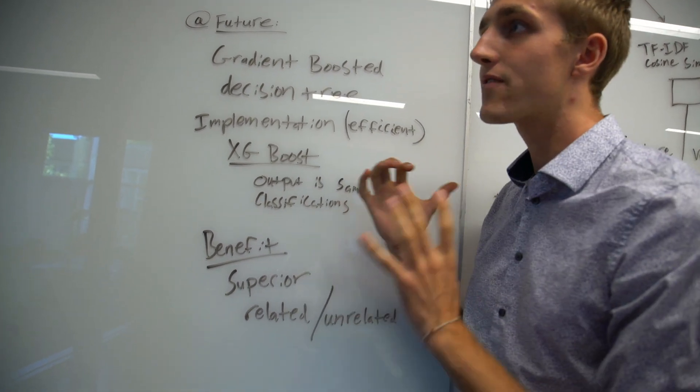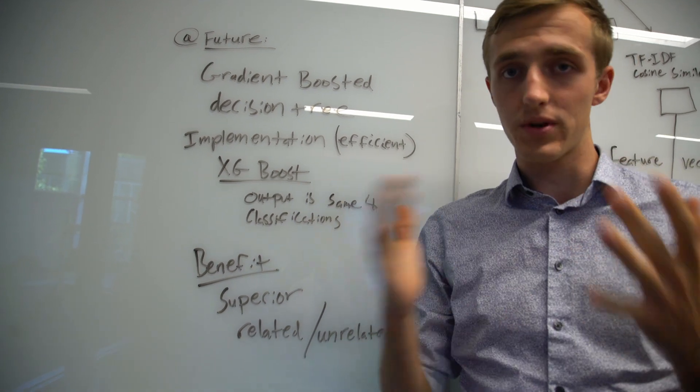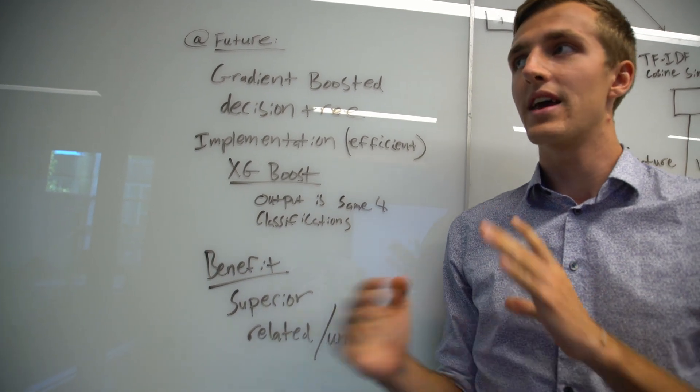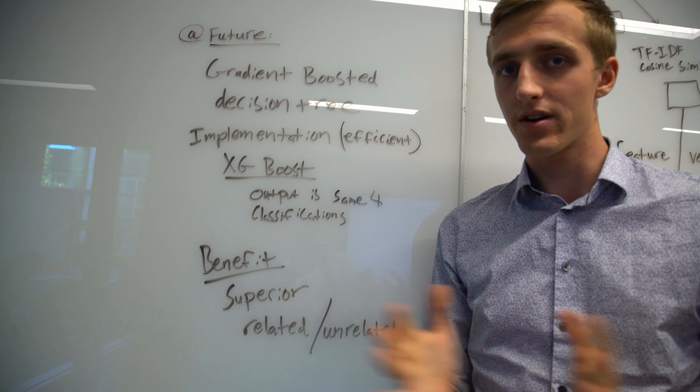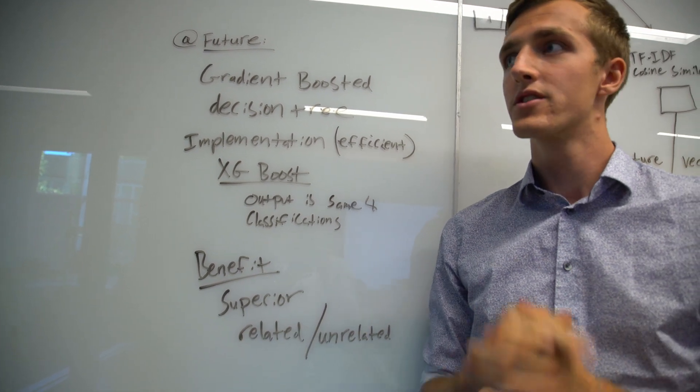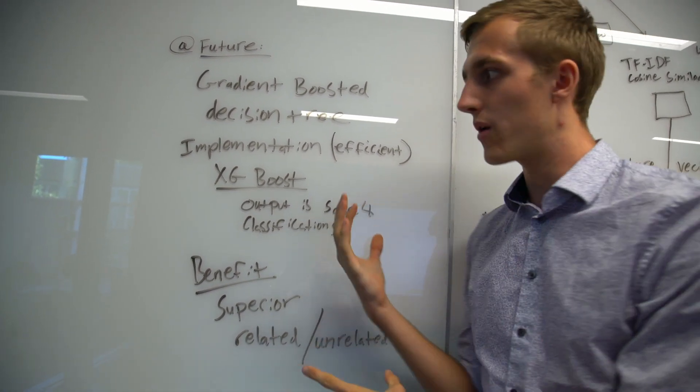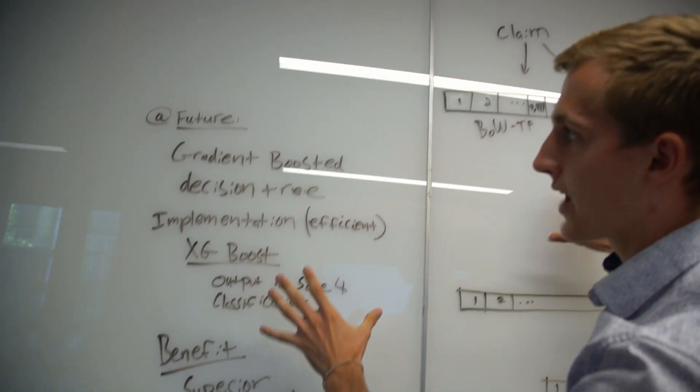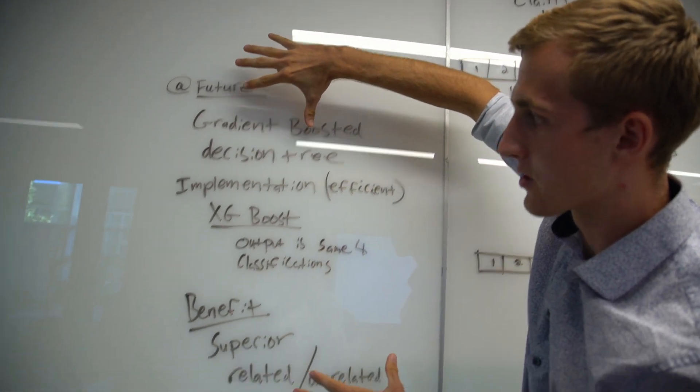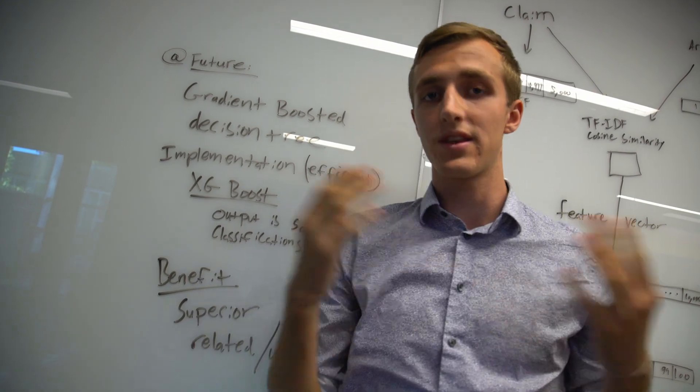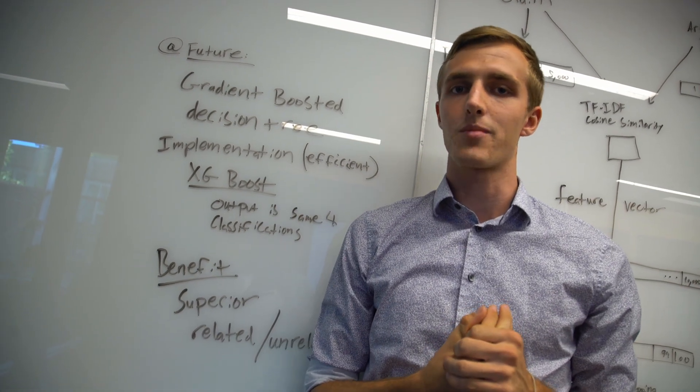Our current accuracy for determining related articles and the agree/disagree, all four classifications, is about 82% with our testing dataset. We're doing really well so far, but we always want to get better. I think an ensemble approach by implementing our gradient boosted tree and our machine learning model will create the best approach overall for our problem.